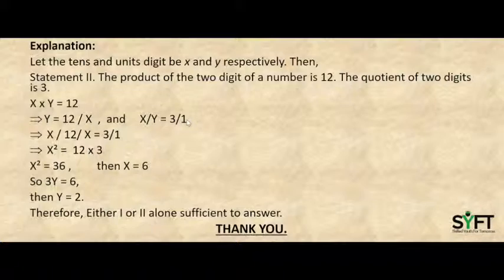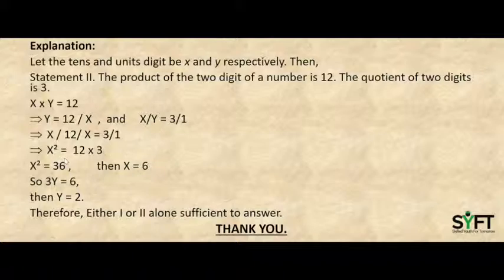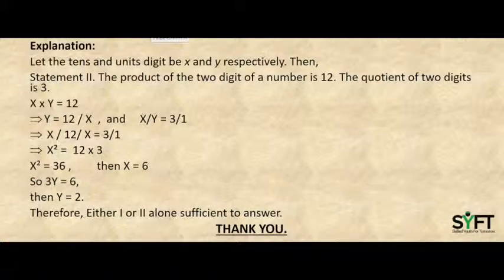For Statement 2 — the product of the two digits is 12 and the quotient is 3 — we have x × y = 12, so y = 12/x. And x/y = 3. Substituting y, we get x/(12/x) = 3, which simplifies to x² = 36, so x = 6 and y = 2. Therefore either Statement 1 or Statement 2 alone is sufficient to answer the question.